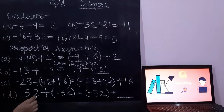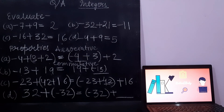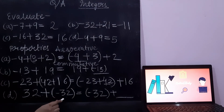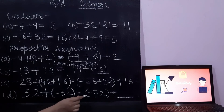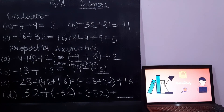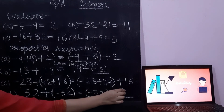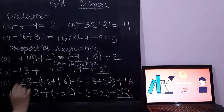Can you identify which property is used in option D? The additive inverse property is used. The additive inverse of 32 is minus 32. And the additive inverse of minus 32 is plus 32.